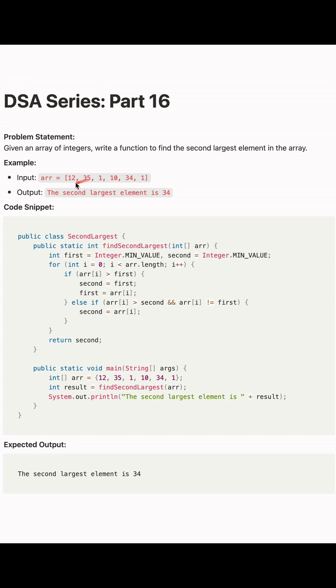Here the example is this given array, and as we can see, the second largest is 34. So we have to output the second largest element is 34.